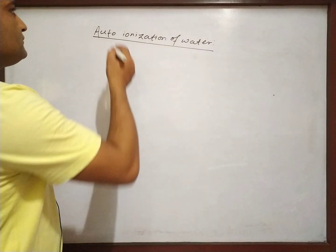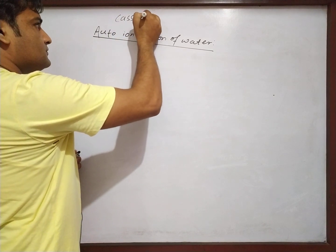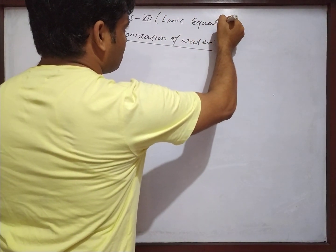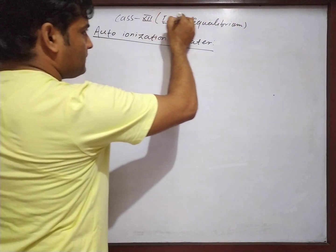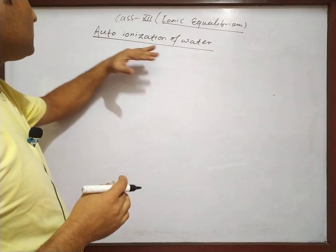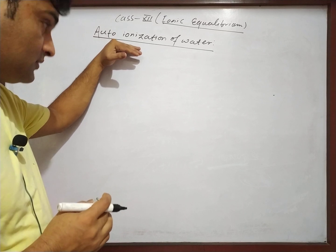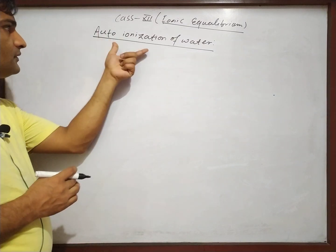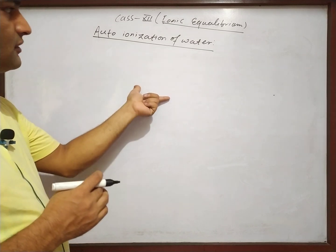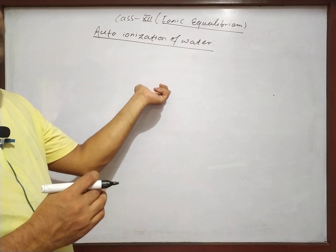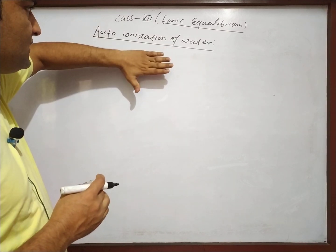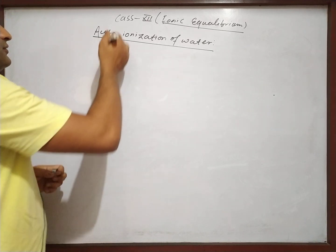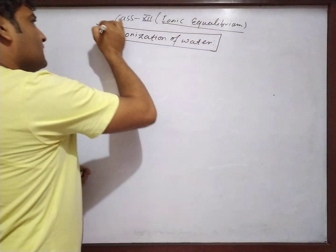This video is class 2 on the chapter ionic equilibrium. In this ionic equilibrium chapter, I have already uploaded two videos. Those covered auto ionization of water, pH and pH scale, numericals, Ostwald's dilution law, and solubility and solubility product. Ostwald's dilution law is uploaded in the past. Auto ionization of water and pH will be covered here using the volumetric method.